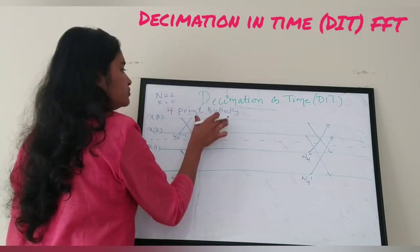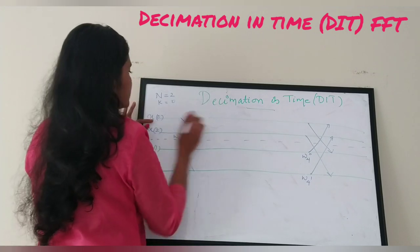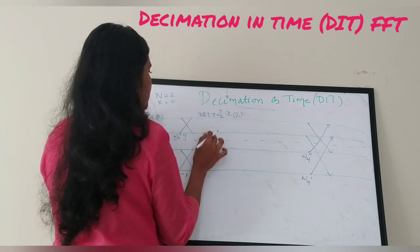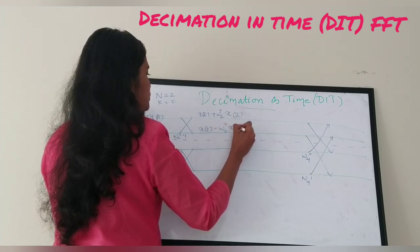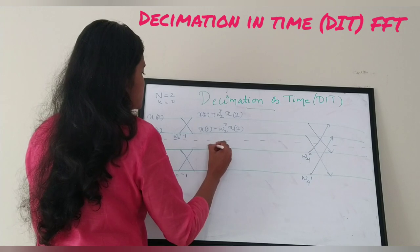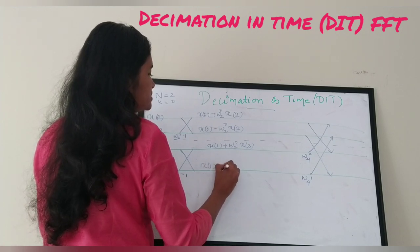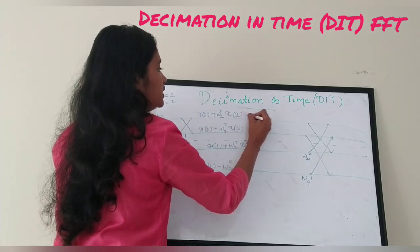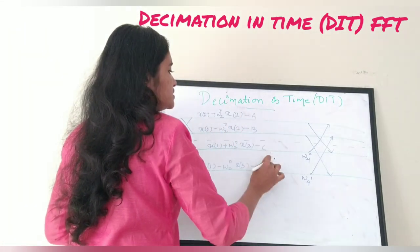The output of stage one: for the upper branch of the first butterfly it is x of 0 plus W_2 raised to 0 into x of 2, and the lower branch gives x of 0 minus W_2 raised to 0 into x of 2. For the second butterfly: x of 1 plus W_2 raised to 0 into x of 3, and x of 1 minus W_2 raised to 0 into x of 3. For simplicity, call these A, B, C, and D respectively.